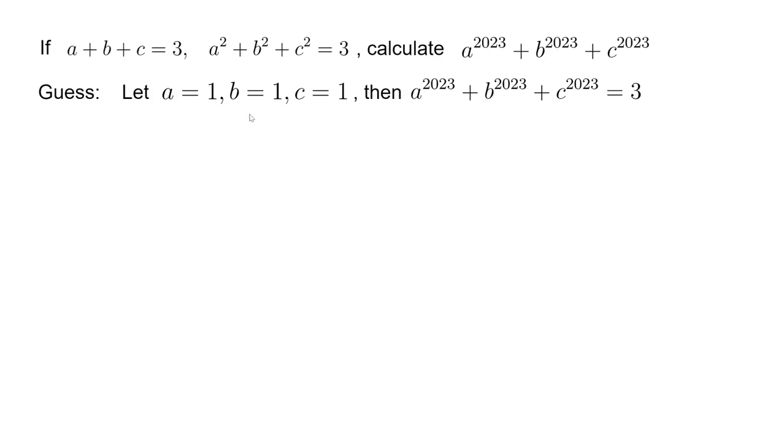It seems that any kind of expression like this—a certain degree of a plus certain degree of b plus certain degree of c—if they are of the same degree, they always equal 3. That's just a guess. Now we can prove that.